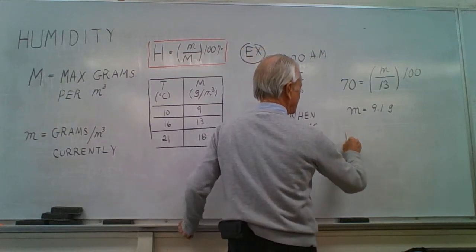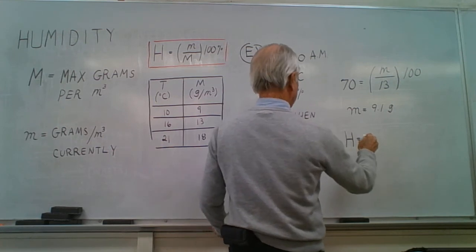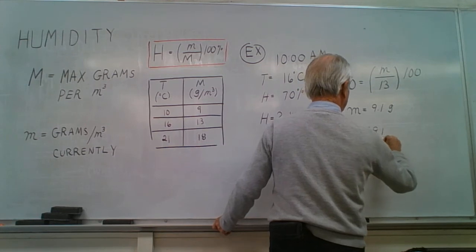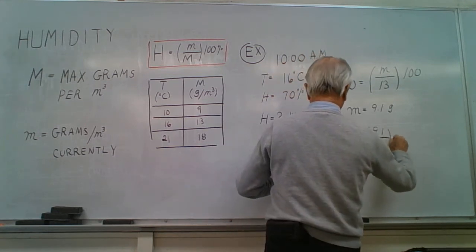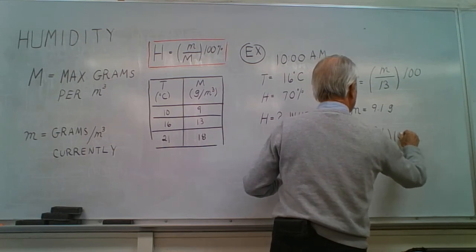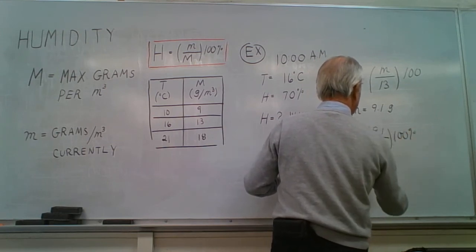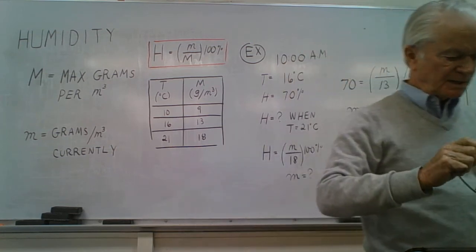We have H equals parentheses 9.1 divided by 18 times 100, units will be percent, and that works out to the following number.